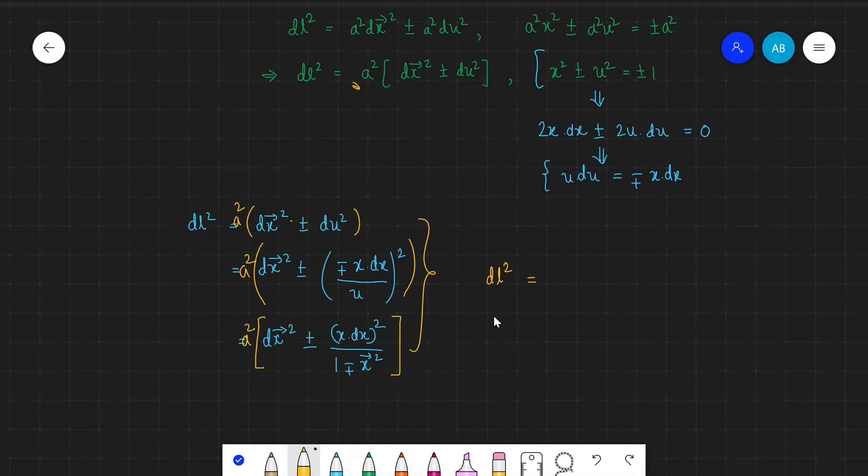We can write a² so that we can write the line element for this three-dimensional space which has some curvature as a² multiplied by dx² — instead of plus-minus we take k representing the curvature — multiplied by x² dx² divided by 1 minus kx².